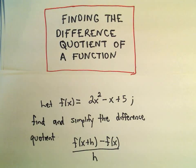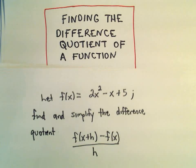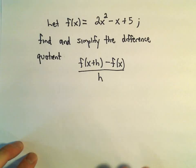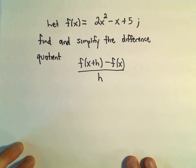Okay, in this example, I'm going to do one more problem where we find the difference quotient of a function. So here we have the function 2x squared minus x plus 5. Maybe a little more tedious, but hopefully it won't be too bad.